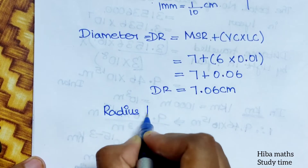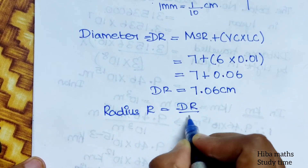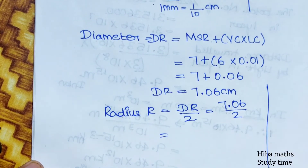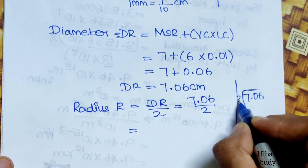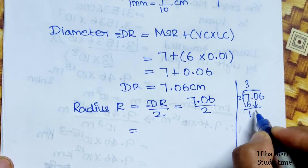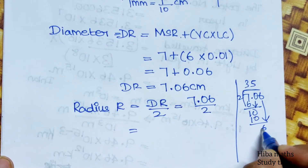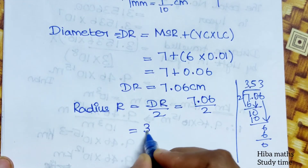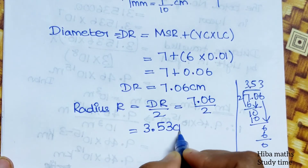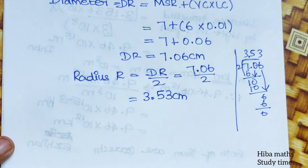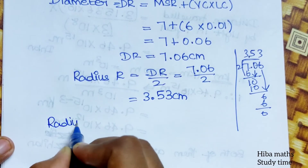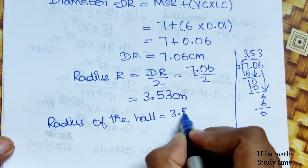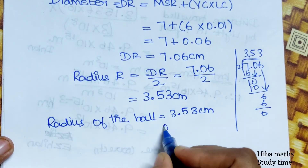Radius is equal to diameter divided by 2. That is equal to 7.06 divided by 2. 7.06 divided by 2 gives 3.53 cm. So the radius of the ball is 3.53 cm.